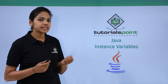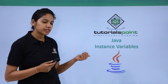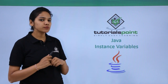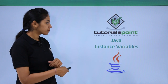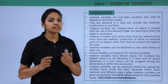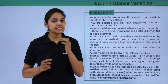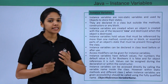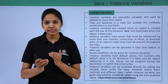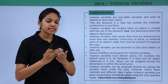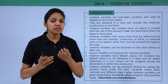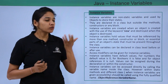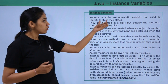The next type of variable is instance variable. Let us see what instance variables do. Instance variables are nothing but non-static variables. What is static and non-static we will learn in detail, but for now it is a non-static variable which is used to store information about the object.